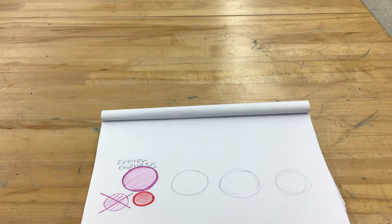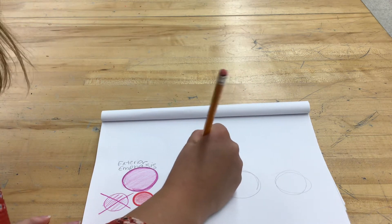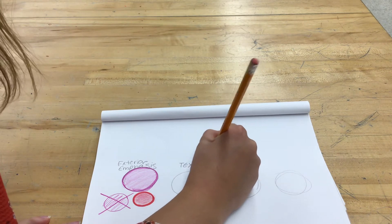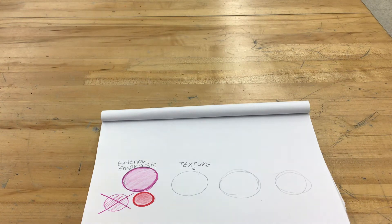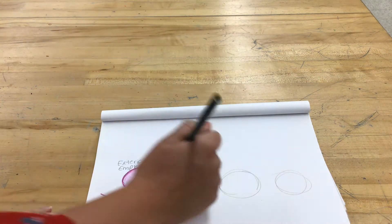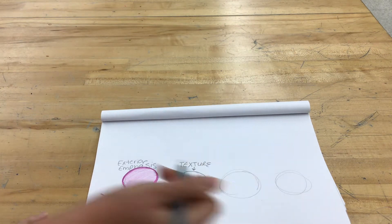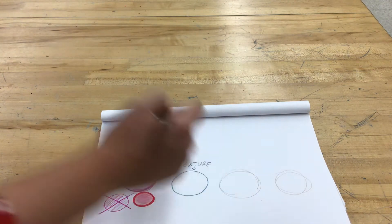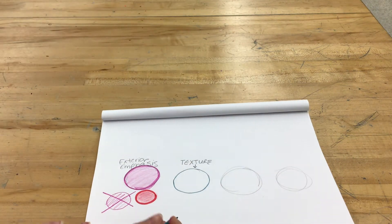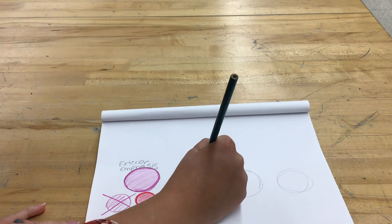The next coloring technique we are going to look at is adding texture. So you need to label your paper or your next circle texture. For texture I think it looks best, I am going to start out with an exterior emphasis. So I am going to outline my subject and then I am going to go in and press pretty hard on my paper with my colored pencil and I am going to create a texture.